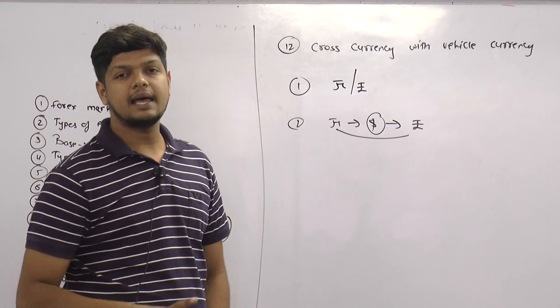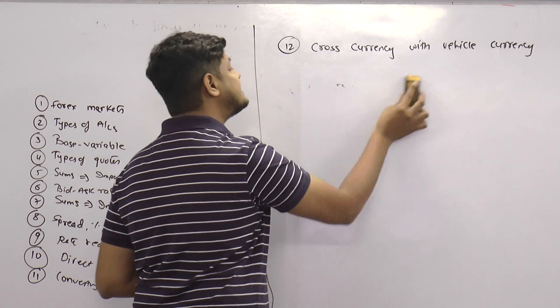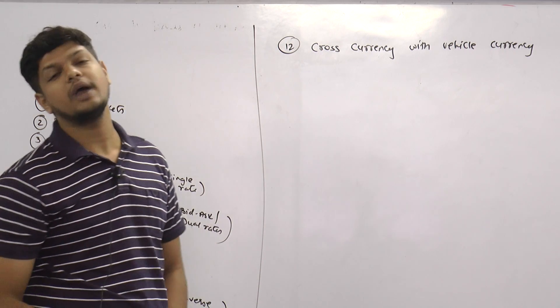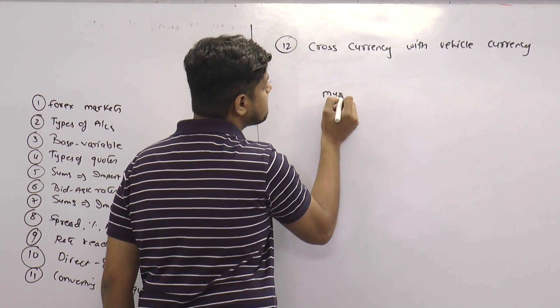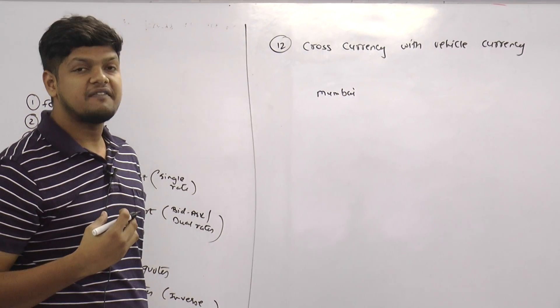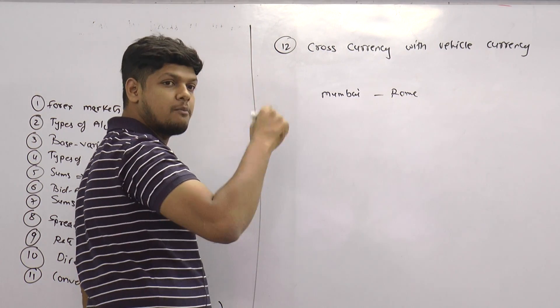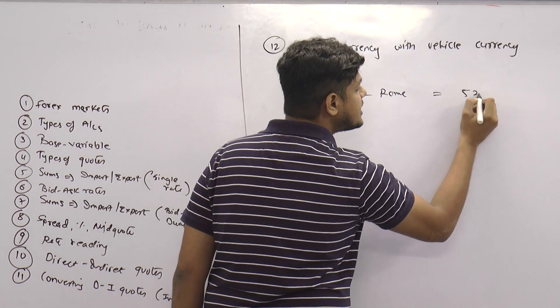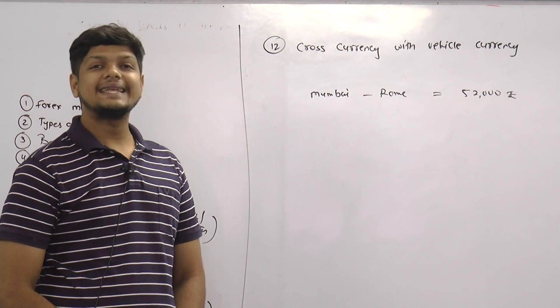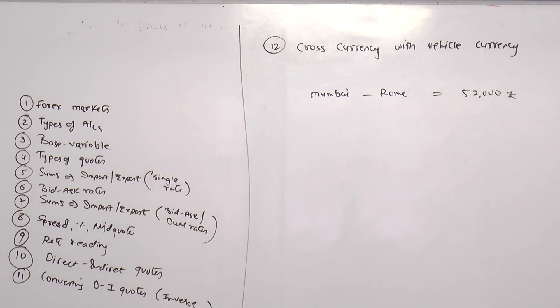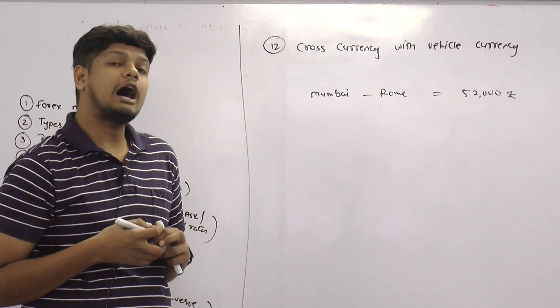Now first let me give an example of where this concept has actually come from. The concept basically belongs to the actual concept of travelling through air. When you take a direct flight, for example from Mumbai to Rome, the direct flight rates from Mumbai to Rome were somewhere around 52,000 rupees. This was a direct quote because there were rarely flights directly from Mumbai to Rome.